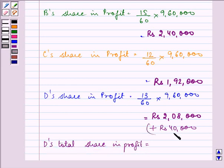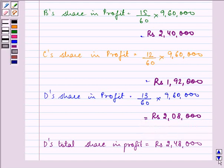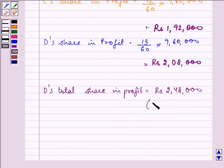And that total share in profit is Rs. 2,48,000. We can write it here in the bracket. That is 2,08,000 plus 40,000.